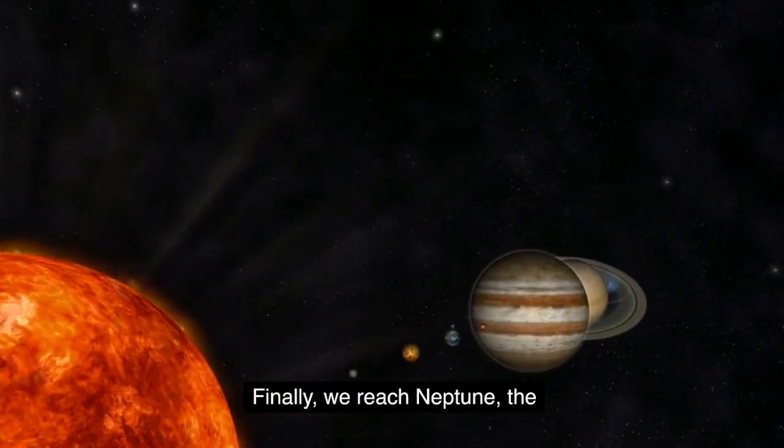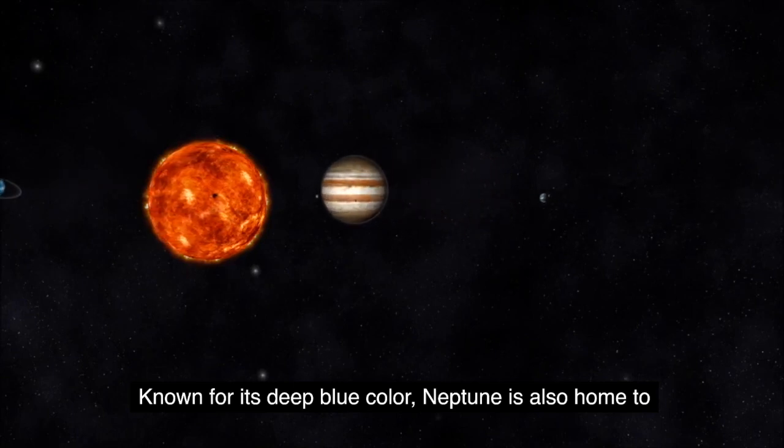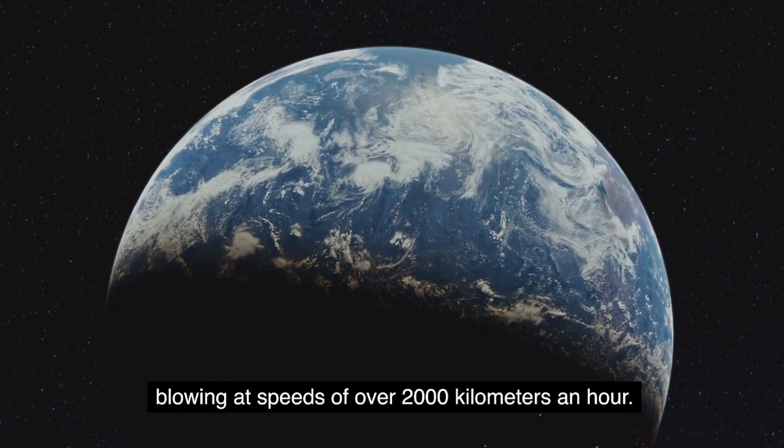Finally, we reach Neptune, the furthest planet from the Sun. Known for its deep blue color, Neptune is also home to the strongest winds in the solar system, blowing at speeds of over 2000 kilometers an hour.